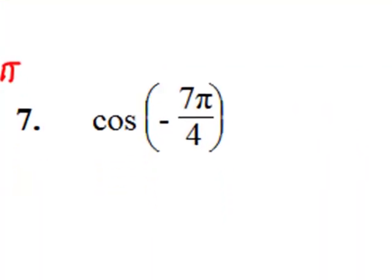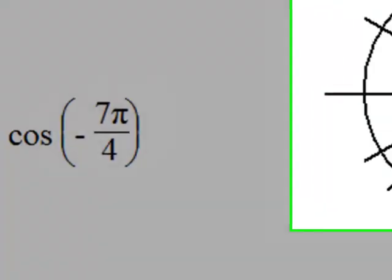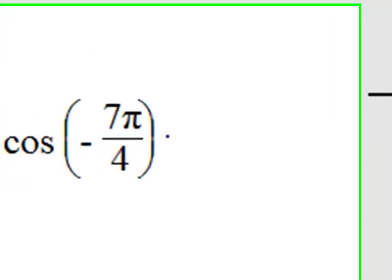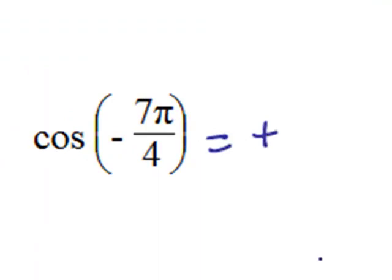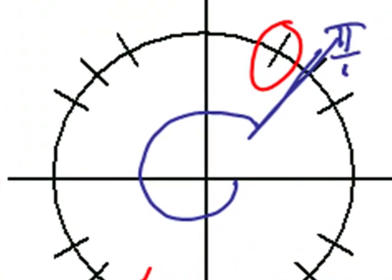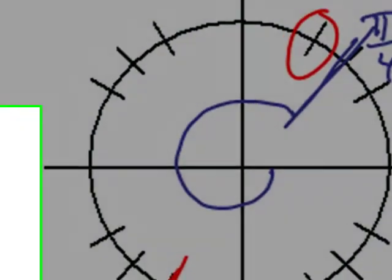Number seven. Cosine of negative seven pi over four. That's almost a full circle in the negative direction, but not quite. It meets right up here in the first quadrant. So being a first quadrant value, cosine is positive. And cosine at pi over four is the square root of two over two.